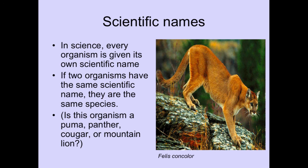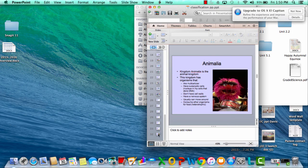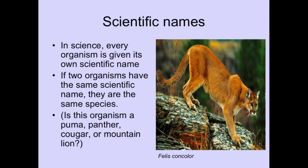In science, every organism is given its own scientific name. If two organisms have the same scientific name, they have to be the same species. This organism here is called a puma, panther, cougar, or mountain lion — but it's actually a trick question because they are all the same thing. These are common names that depend on where you live, but they are all the same species: Felis concolor. Felis is the genus and concolor is the species. So rewind this if needed, but make sure you understand the six kingdoms and their characteristics, and understand the classification from kingdom all the way to species.